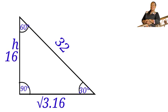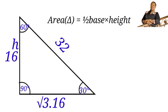Now we have all the sides of this triangle. So we can go ahead and find the area of this triangle by using the formula area equals to half base times height. Our base here is the square root of 3 times 16, and our height is 16. So let us substitute them into the formula.